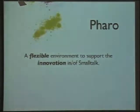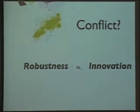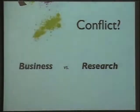The second direction is having a robust environment to support getting a job done — not research, but a system to actually get work done. One might think this is a conflict: robustness on one hand, innovation on the other. We want to do business, so we need a stable system that does not crumble under our feet while solving real problems. Research people can use something unstable because they're just exploring. But I actually think this is not a conflict.